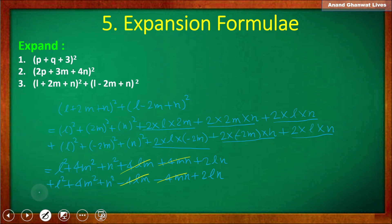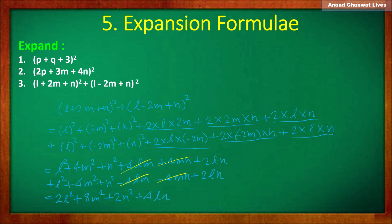Adding the remaining terms: l² plus l² is 2l², 4m² plus 4m² is 8m², n² plus n² is 2n², and 2ln plus 2ln is 4ln. So the final expansion equals 2l² plus 8m² plus 2n² plus 4ln. I hope you all understood. Thank you.